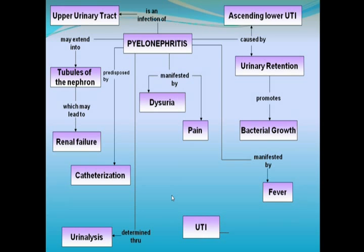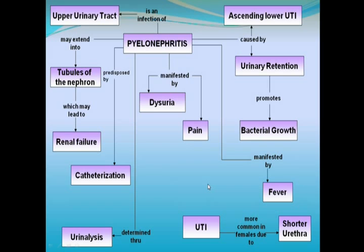UTI is an infection involving the kidneys, ureters, bladder, and urethra. It is more common in females because of a shorter urethra and the proximity of the urethra to the vagina and anus. Sexual intercourse and forward cleansing following defecation offer a primary source of contamination. The epithelium of the kidneys, ureter, and bladder is sterile in the healthy individual.